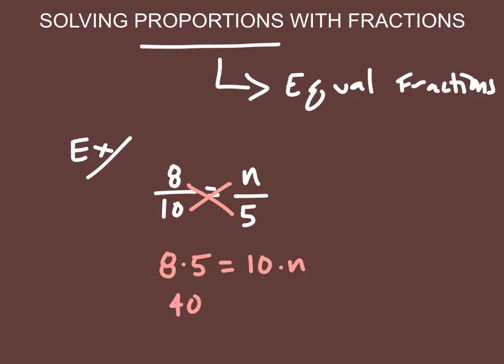We can multiply 8 times 5. That gives us 40, and that's equal to 10n, and then divide both sides by 10. And we get that n is equal to 4.